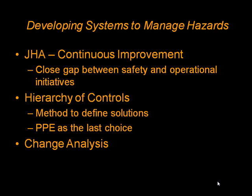By the end of this discussion, you should be able to define how the JHA process can provide continuous improvement, use the hierarchy of controls, identify some of the core understandings of personal protective equipment and why it is the last choice of control whenever possible, and understand change analysis and where to gather information for it.